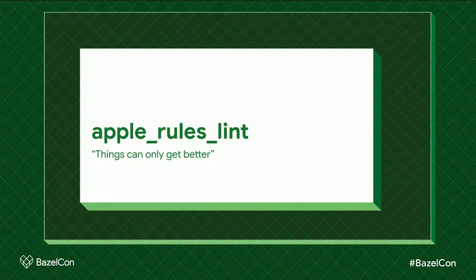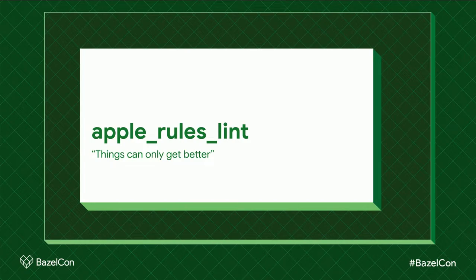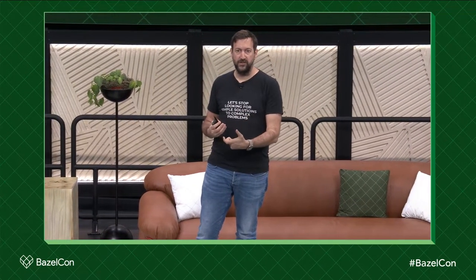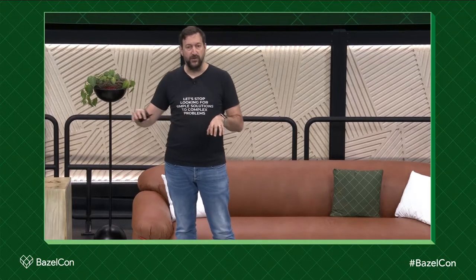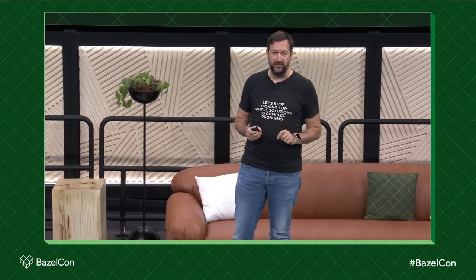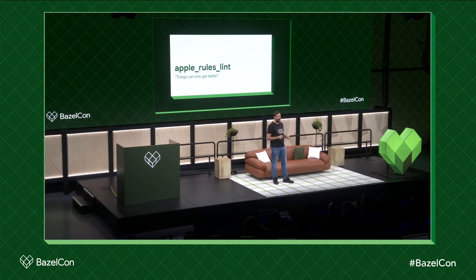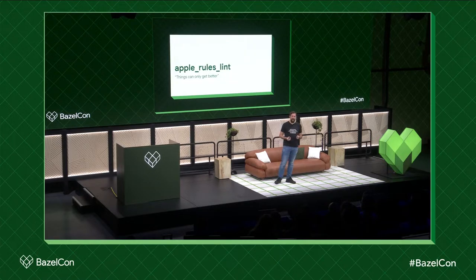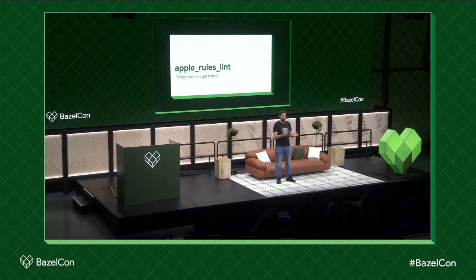That leads us on to the second repo I worked on: Apple Rules Lint. If you're not familiar with it, it's a framework for adding linters to your builds. It has no linters itself, but provides a framework where you can say: with this well-known name — Java CheckStyle, for example — is there a configuration? Fantastic, there is. Then I want to add these additional tests to the build. Your lint tests are available as actual test classes, so they run with bazel test. There's no way for your engineers to forget to run their lint tests.